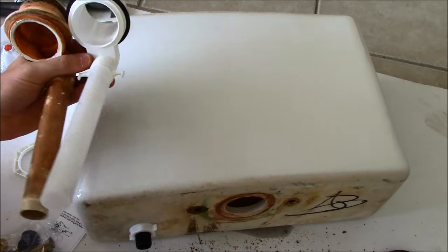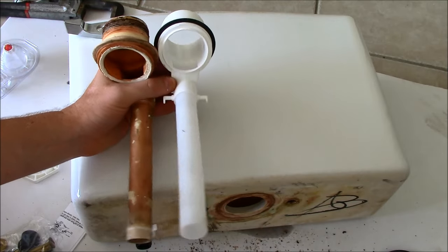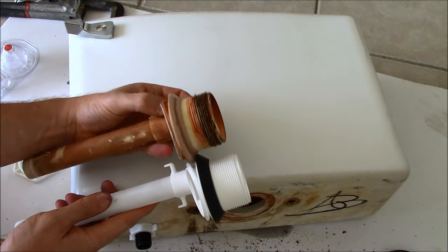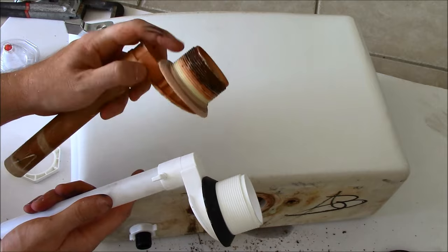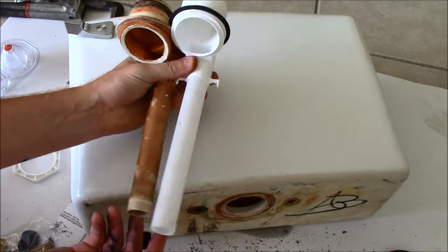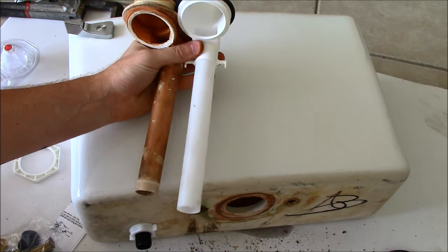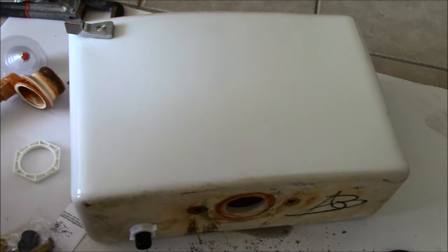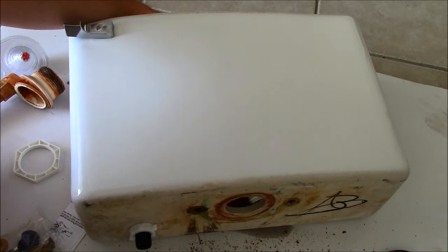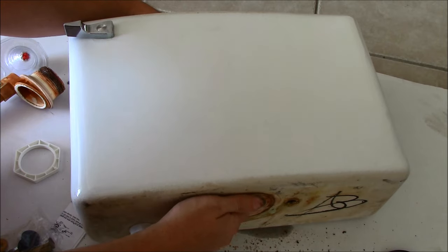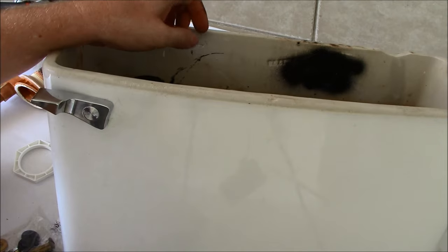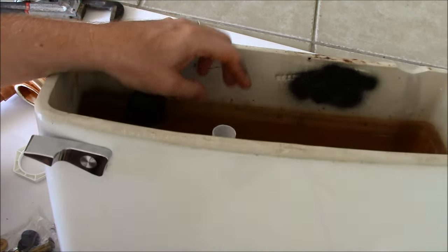Before we start putting things back together we want to make sure that we are putting in something that is going to fit properly. This is a 3 inch what we're taking out and this is a 3 inch that we're putting in so that's a good fit. The overflow tube is slightly longer on the new one, so we need to make sure that when it's installed it doesn't extend beyond the top of the tank. And that's going to work fine.